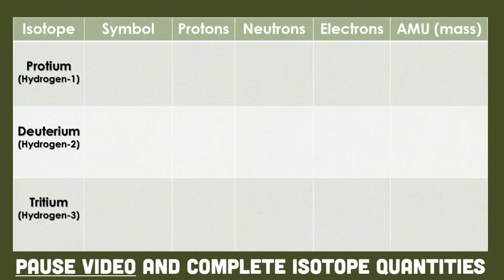Looking at this chart, let's think about the different isotopes of hydrogen. It's called protium, deuterium, and tritium. You'll notice that it's hydrogen with a mass of one, hydrogen with a mass of two, and hydrogen with a mass of three. So right now, why don't you pause the video and write down the isotopic symbol, the number of protons, neutrons, electrons, and AMU — which is the atomic mass unit, just the mass of these isotopes.